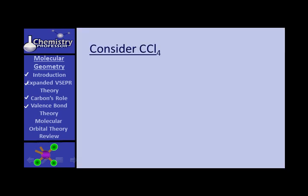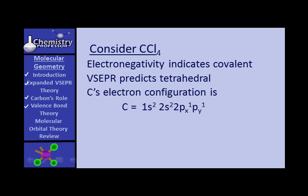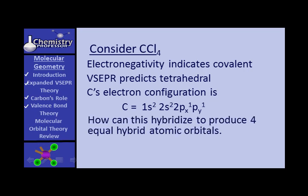For tetrahedral geometry, let's consider carbon tetrachloride. Electronegativity tells us this should be a covalent molecule, and VSEPR predicts it to be tetrahedral. Carbon's electron configuration is 1S2, 2S2, 2Px and 2Py each with one electron. How can this hybridize to produce four equal atomic orbitals?